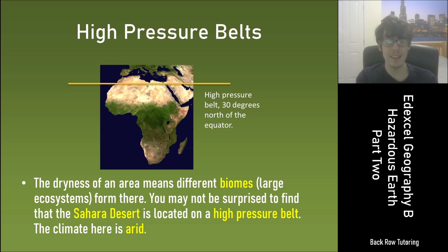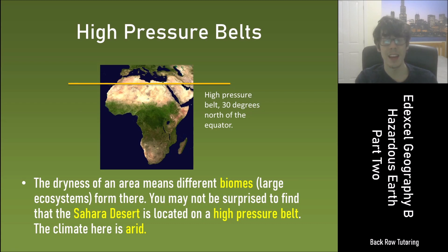As you can see, this line illustrates a high pressure band. This is found at 30 degrees north of the equator and it passes right through this desert, and of course in a desert the climate is dry.